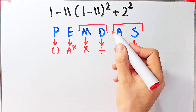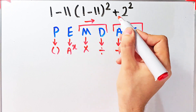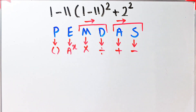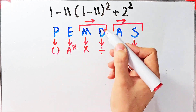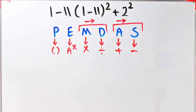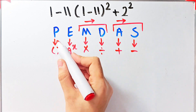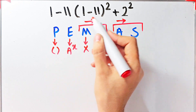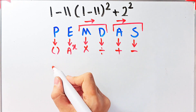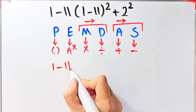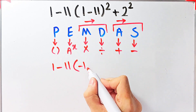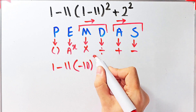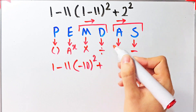When we have both in an expression, we start from the left and simplify. In this question we have subtraction, multiplication, parentheses, exponent, and addition. First we simplify the parentheses: 1 minus 11 equals negative 10, then times 1 minus 11 equals negative 10, giving us negative 10 to the power of 2, plus 2 to the power of 2.